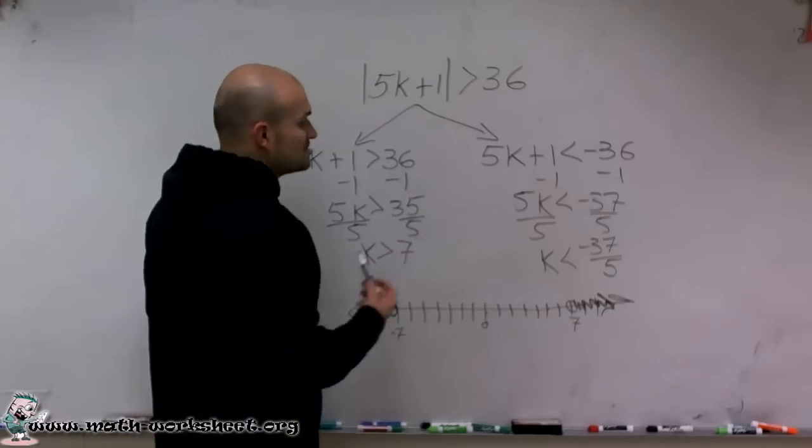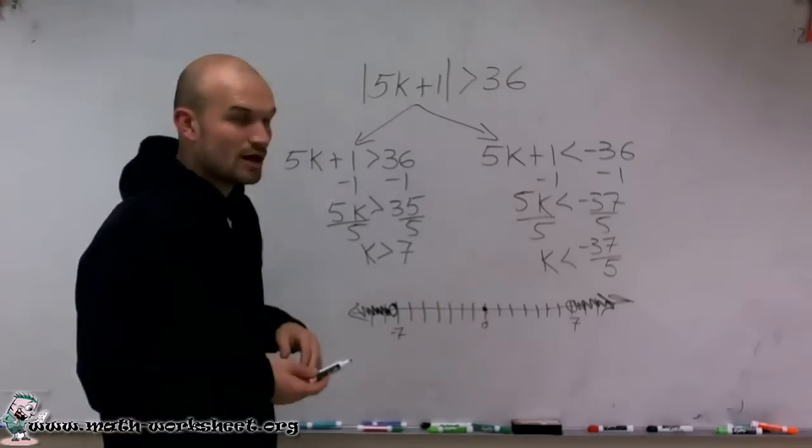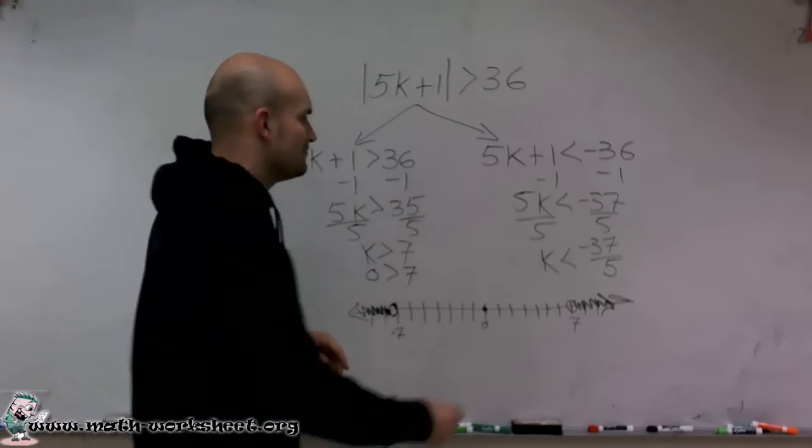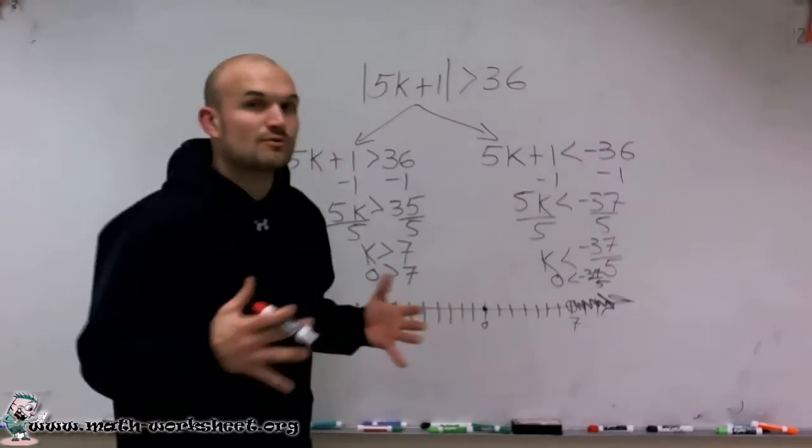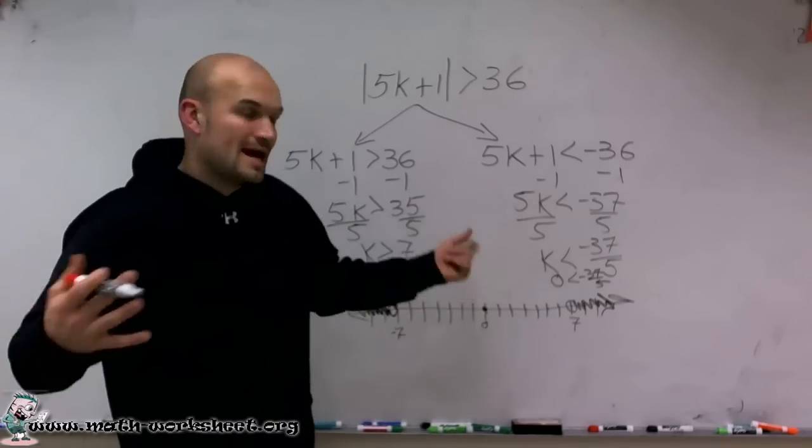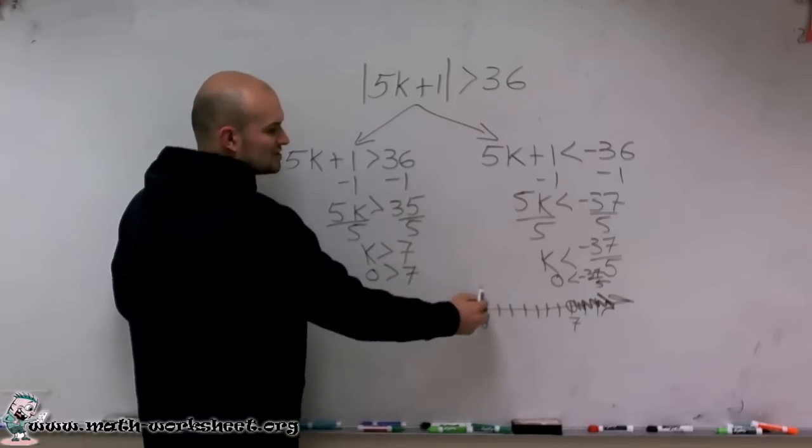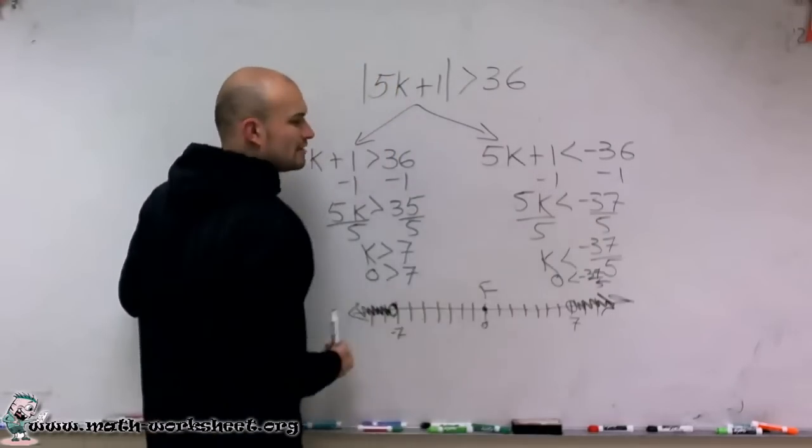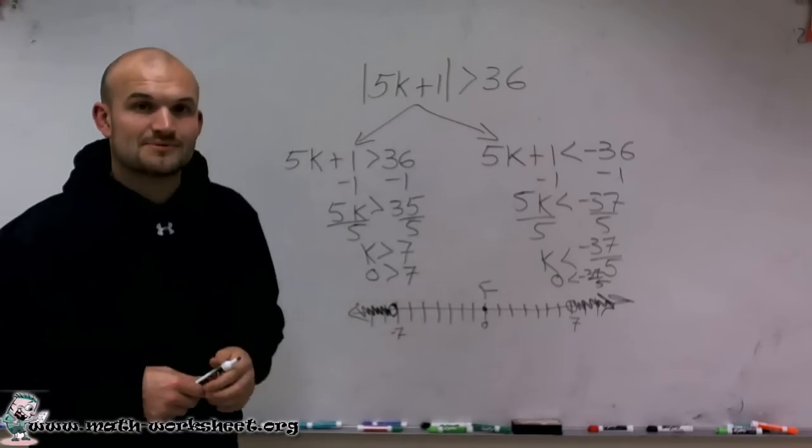Another way you could always do this is always pick a test point. And let's say we pick the easiest test point here is 0. So you could plug in 0 for each inequality. And if it's true, then that's where you shade towards your true test point. If it's false, you're going to shade away. So I notice 0 is greater than 7, for that point it's false. So therefore, I shade on the other side of my point. For here, 0 is less than negative, that's false as well for this equation. So that's why I shade away from my test point.